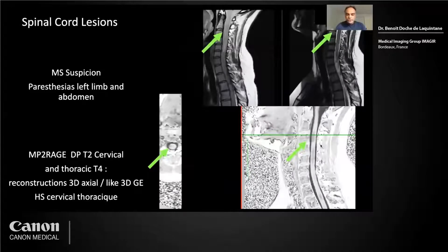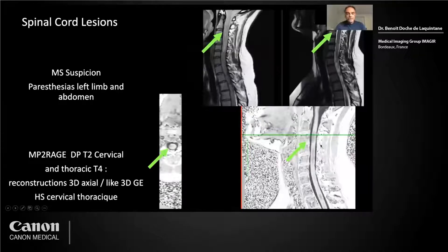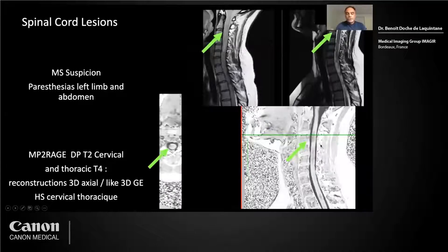I also use sagittal MP2R. On the cervical spine, you have two lesions around C3, C4, and C5. On PD you see them, but you see them better with sagittal MP2R as a hypointense signal, and it's a 3D acquisition so you're able to do axial reconstructions. I think this is a better way for the future of looking at the spine with more confidence about the lesion.